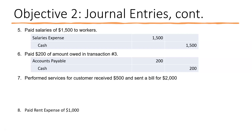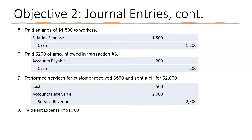Transaction seven: performed services for a customer, received $500 cash and sent a bill for $2,500. We received $500 cash, so we debit cash $500. We sent a bill for the remaining $2,000, so our customer owes us $2,000 — we debit accounts receivable $2,000. Then we record service revenue for the total $2,500 with a credit, because credit increases revenue.